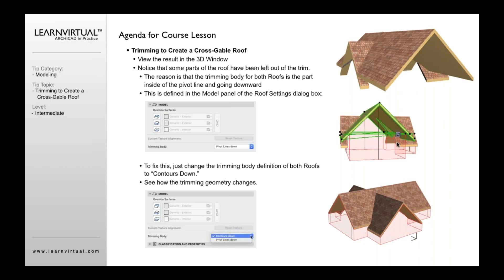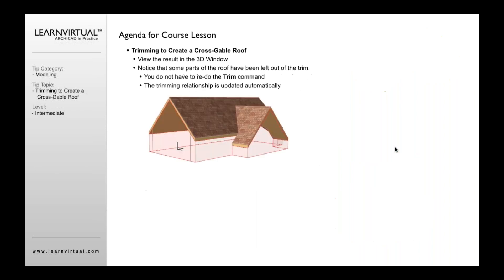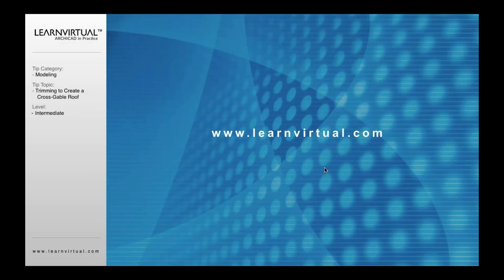Otherwise, you'll end up with little pieces where it trims from the pivot lines and not from the contours. With the correct setting, you'll end up with a nice trimmed roof that shows the interior as you would expect. That is our tip of the week.